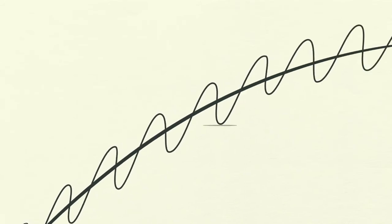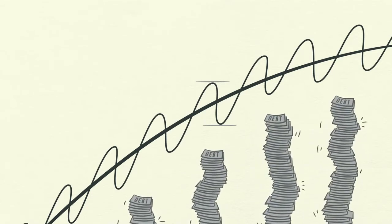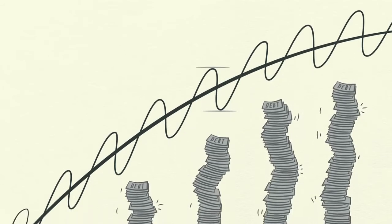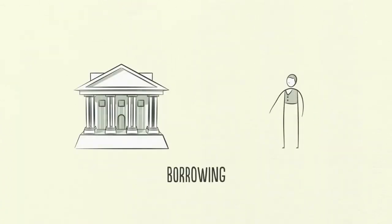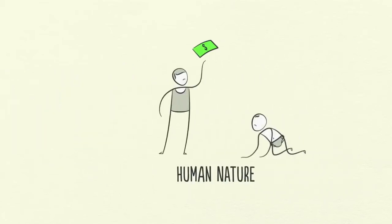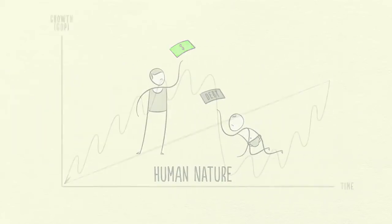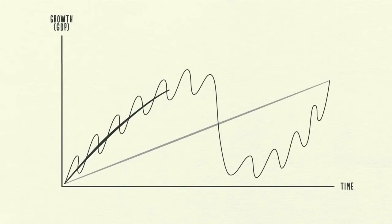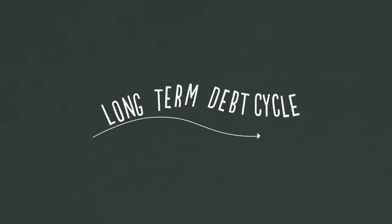Notice that the bottom and top of each cycle finish with more growth than the previous cycle and with more debt. Why? Because people push it — they have an inclination to borrow and spend more instead of paying back debt. It's human nature. Because of this, over long periods of time, debts rise faster than incomes, creating the long-term debt cycle.